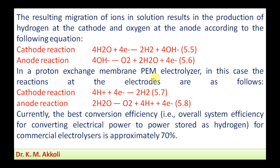In a Proton Exchange Membrane (PEM) electrolyzer, the reactions are as follows. The cathode reaction: four molecules of hydrogen combine with four electrons to form two molecules of hydrogen. The anode reaction: two molecules of water split into one molecule of oxygen, four molecules of hydrogen ions, and four electrons.